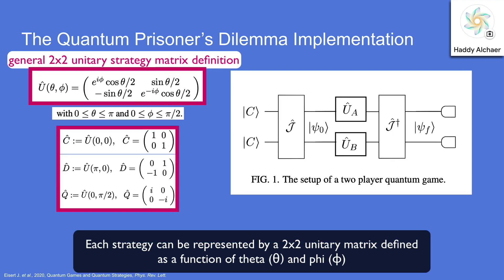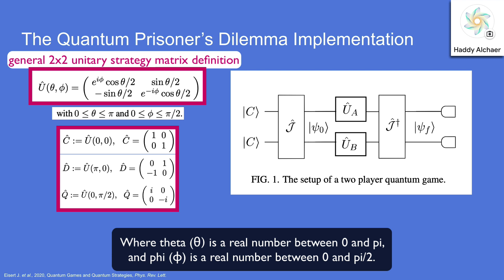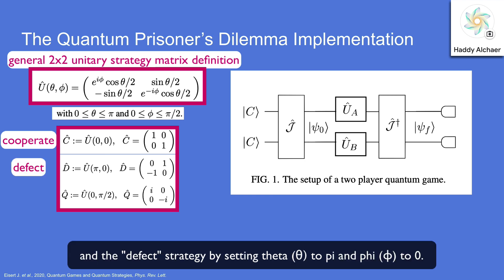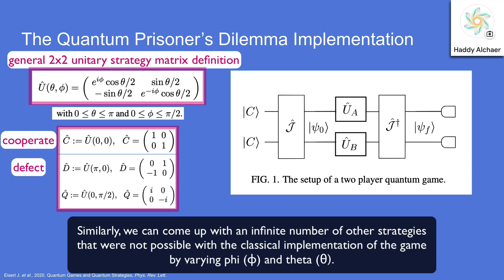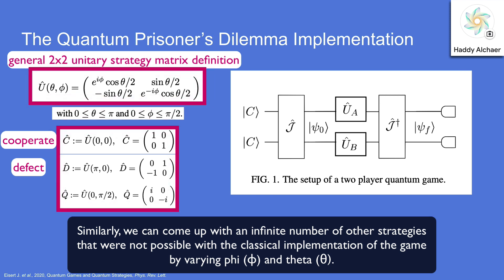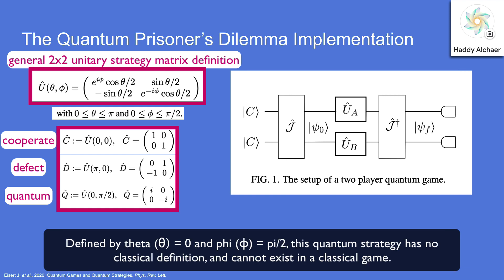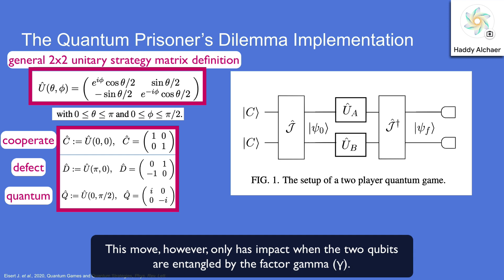Applying this matrix will entangle the two qubits to the degree of the entanglement factor gamma. Afterwards, the two players choose their strategies. Each strategy can be represented by a two-by-two unitary matrix defined as a function of theta and phi, where theta is a real number between zero and pi, and phi is a real number between zero and pi over two. We can define the cooperate strategy by setting both variables to zero, and the defect strategy by setting theta to pi and phi to zero. Similarly, we can come up with an infinite number of other strategies not possible in the classical game by varying phi and theta.